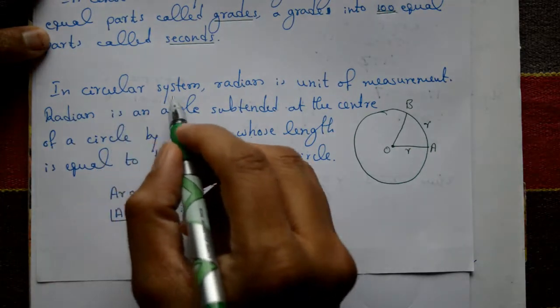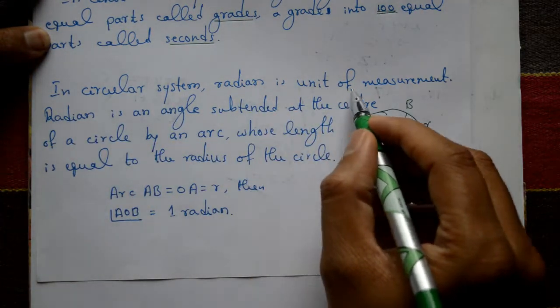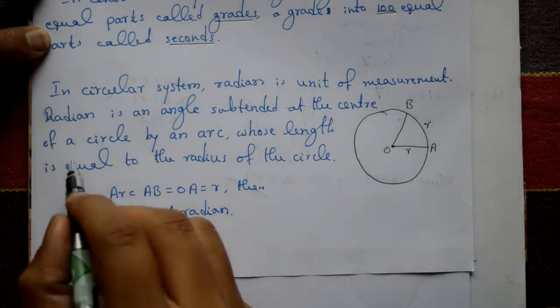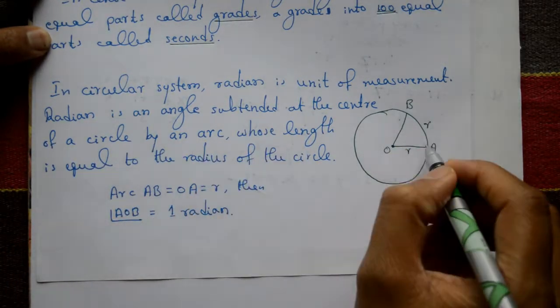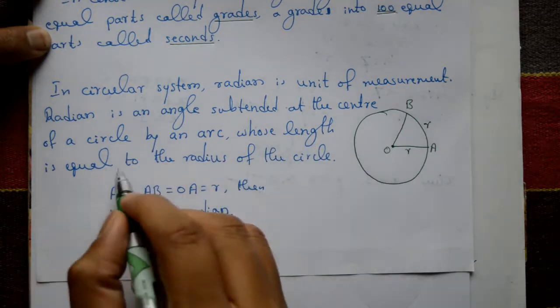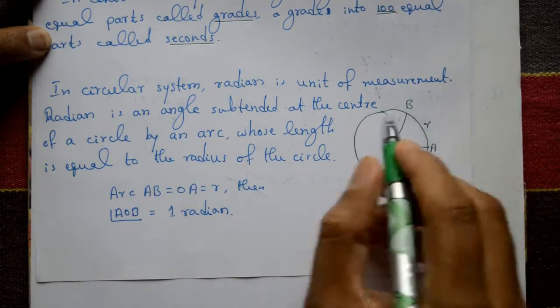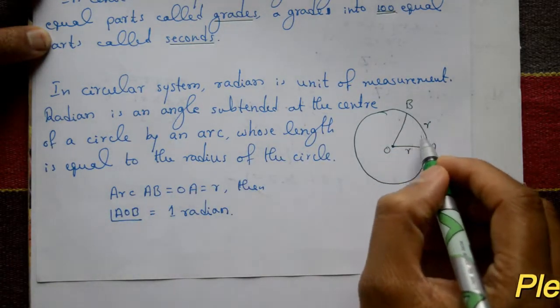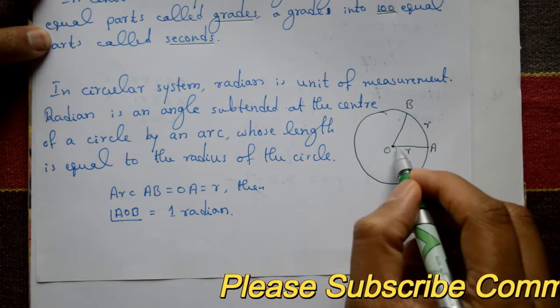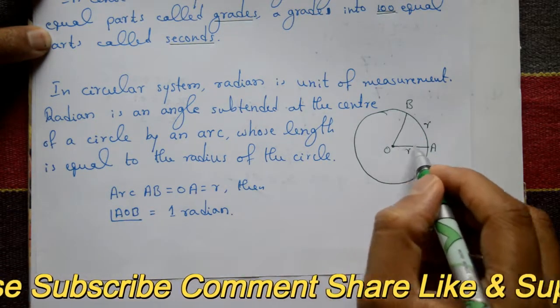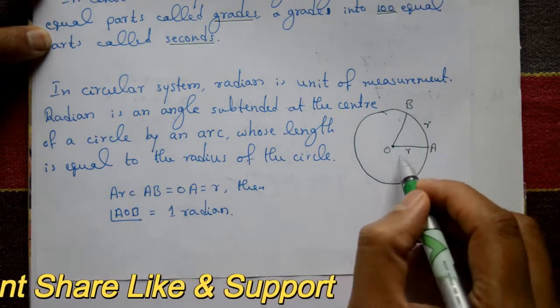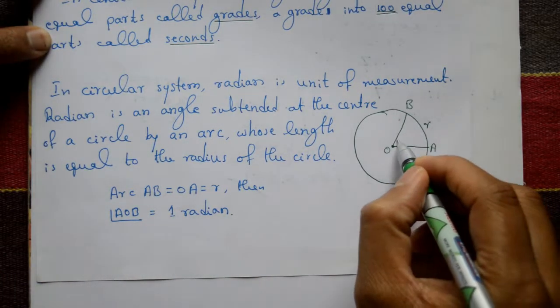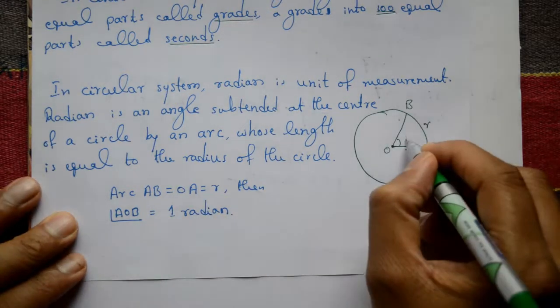In circular system, radian is the unit of measurement. A radian is an angle subtended at the center of a circle by an arc whose length is equal to the radius of the circle. If arc AB equals radius r, then angle AOB equals one radian.